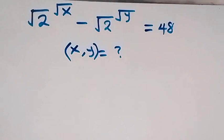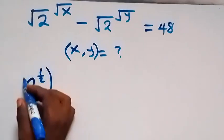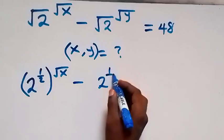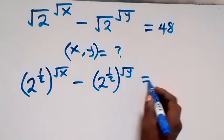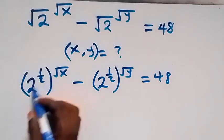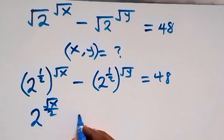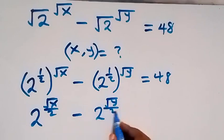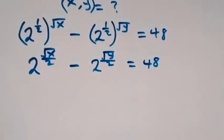To find the values of x and y, let's write this as 2 raised to power half, then raised to power root x, minus 2 raised to power half, then raised to power root y, equals 48. From the law of indices, since the powers multiply, this is the same as 2 raised to power root x over 2, minus 2 raised to power root y over 2, which equals 48.